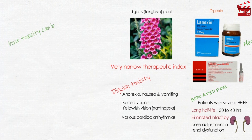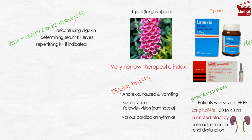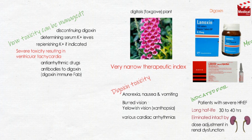Toxicity can often be managed by discontinuing digoxin, determining serum potassium levels, and replenishing potassium if indicated. Severe toxicity resulting in ventricular tachycardia may require administration of antiarrhythmic drugs and the use of antibodies to digoxin — digoxin immune Fab — which bind and inactivate the drug.